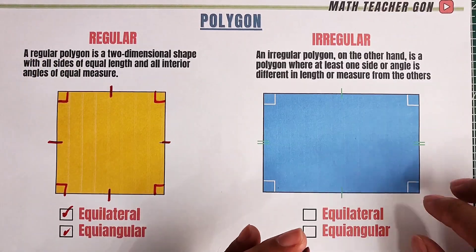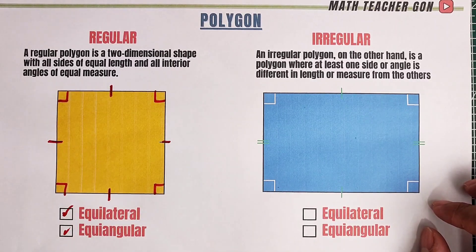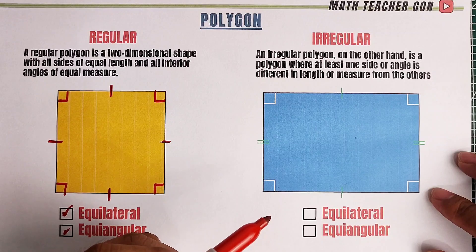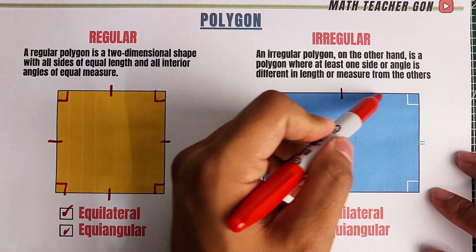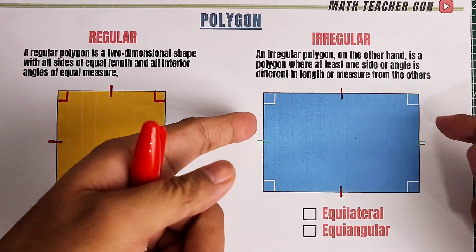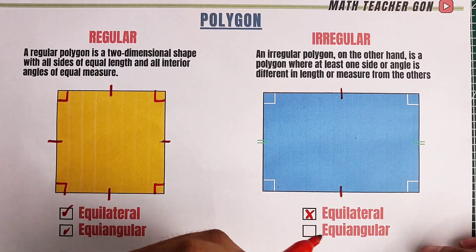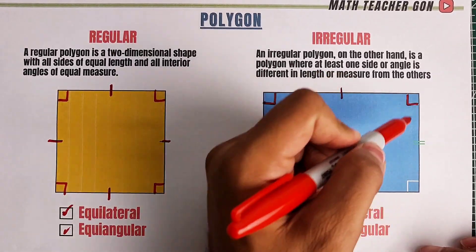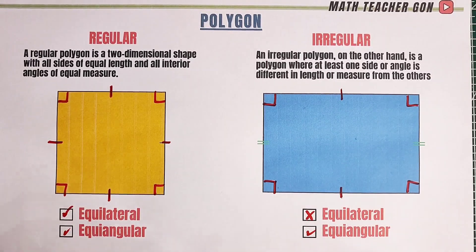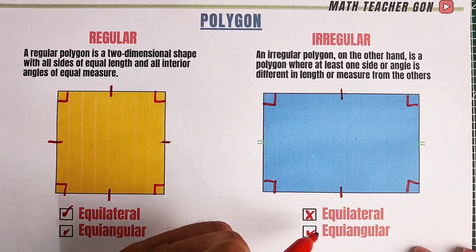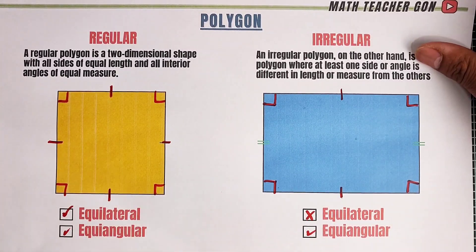So what about this one? Why is this rectangle not a regular polygon? Because the sides are not all equal — this side is congruent with the opposite side, but not with the adjacent sides, meaning it's not equilateral. Let's look at the angles — all the angles are equal, so it is equiangular. But since this one is not equilateral, this one will fall under irregular polygon.